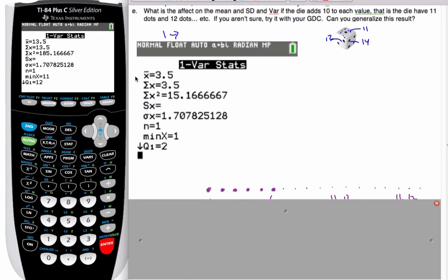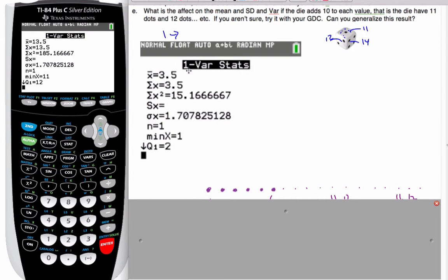Let's compare that to here. Well my mean is 10 higher. Exactly 10 higher. Went to 13.5. The standard deviation is exactly the same.